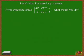Here's what I've asked my students. If you wanted to solve the system 2x plus 5y equals 17 and x minus 2y equals negative 5, what would you do?